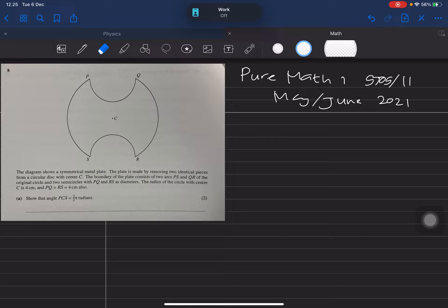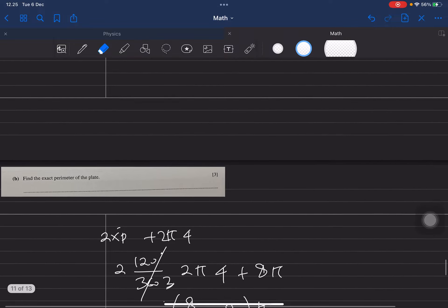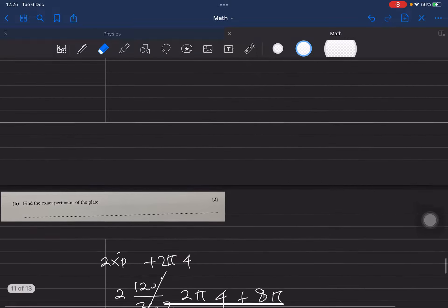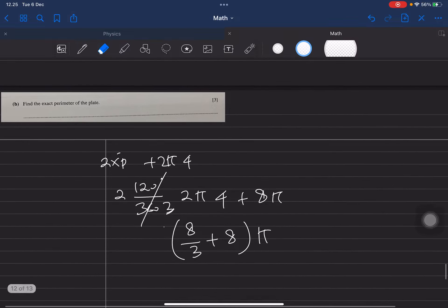I have Pure Math 1, 9709/11. This is on May/June 2021. You may check it. This is number eight. Let me solve maybe two questions.